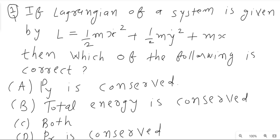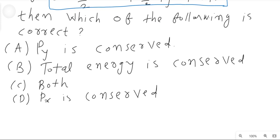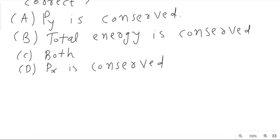Hello everyone, welcome back to my YouTube channel Z2H classes. In this video we will discuss a few MCQs for BARC written examination. The first question: if the Lagrangian of the system is given by L = ½mẋ² + ½mẏ² + mx, then which of the following is correct? We are given four statements from which we have to identify which is correct.